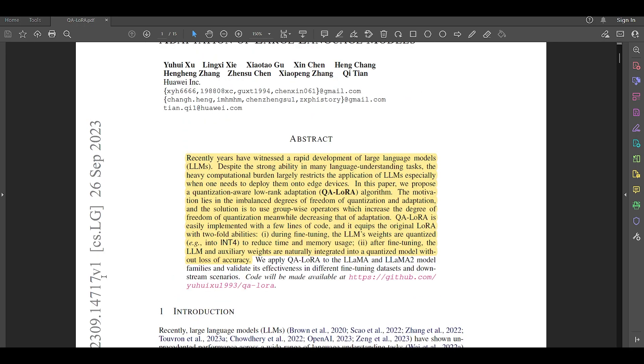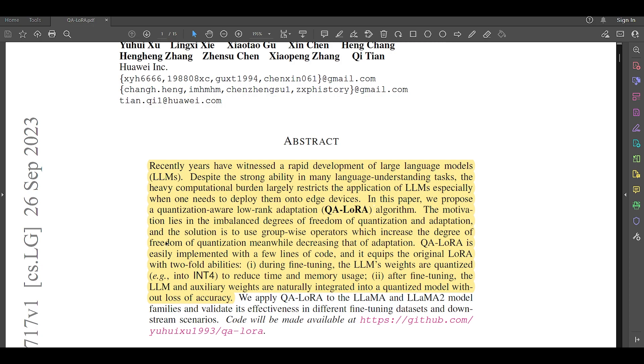Now, going through the abstract of this paper, recently, years have witnessed a rapid development of large language models. Despite the strong ability in many language understanding tasks, the heavy computational burden largely restricts the application of LLMs, especially when one needs to deploy them onto edge devices. In this paper, we propose a quantization-aware low-rank adaptation algorithm. The motivation lies in the imbalanced degree of freedom of quantization and adaptation. And the solution is to use group-wise operators, which increases the degrees of freedom of quantization.